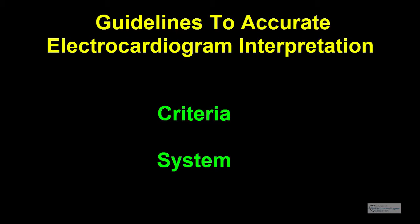In order to accurately interpret an electrocardiogram, you need not only to know the criteria for each condition, but you should also have a system to make sure your interpretation is complete. This section will go over the format that most cardiologists use intuitively to read electrocardiograms. If you follow this system and know the criteria, then you should be able to give accurate, reproducible interpretations easily.